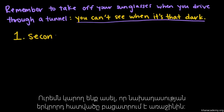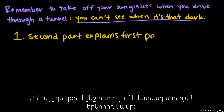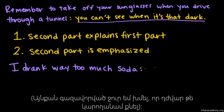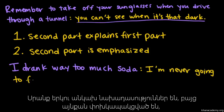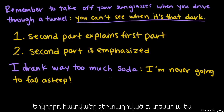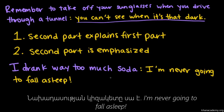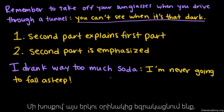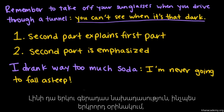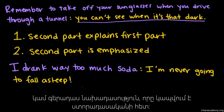There are two types of sentences where it makes sense to have a colon between two parts that could stand on their own. First, the second part explains the first part. The other case is when the second part is emphasized. For example: 'I drank way too much soda: I'm never going to fall asleep.' These are two independent clauses, closely related enough to connect as one sentence, and the second part — I'm never gonna fall asleep — is the focus and is emphasized.